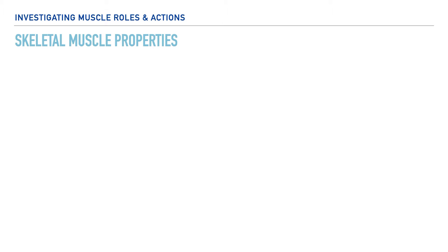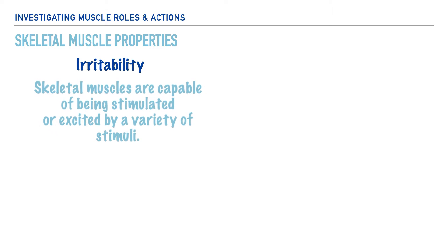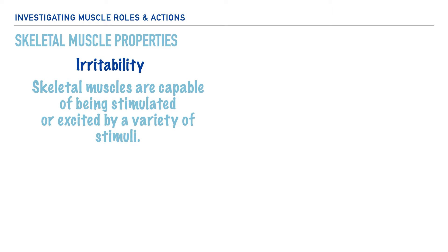Let's jump right in and list the properties of skeletal muscle. First, skeletal muscles are irritable, and the term we utilize to more fully describe this property is irritability. At times you may hear the phrase excitable or excitability to represent this same concept, and this means that our skeletal muscles are capable of being stimulated or excited by a variety of stimuli, whether it be chemical, mechanical, thermal, or electrical.